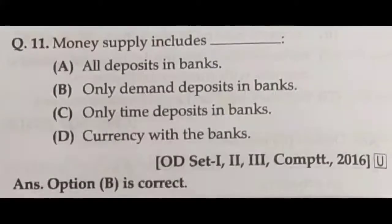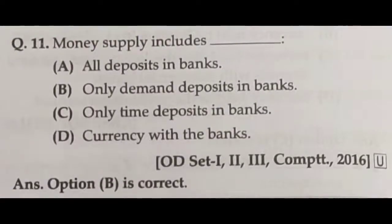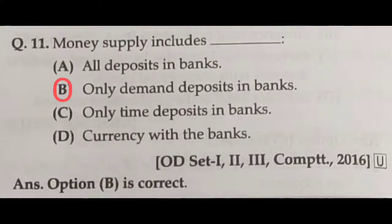Question number eleven: money supply includes — all deposits in banks, only demand deposits in banks, only time deposits in banks, or currency with the banks? Please bear in mind: money supply is the total stock of money circulating in the economy at a particular point of time, including currency and other liquid assets. So answer B — only demand deposits in the bank — is the correct answer.